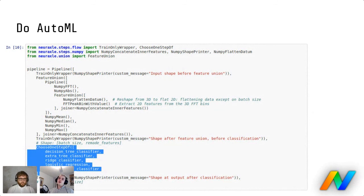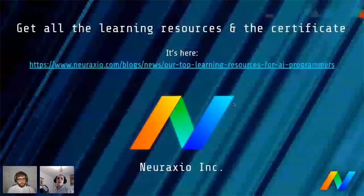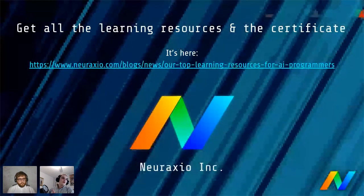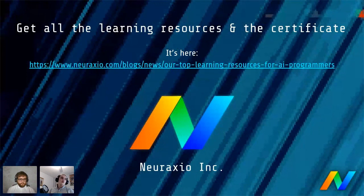Design patterns are a must for doing automated machine learning the right way — your code must be well-structured enough to reach this level of complexity. You could also choose different features with hyperparameters on the features themselves. To conclude, you can get all these learning resources and more on Neuraxle's blog, where there's also a small certificate if you pass the test.